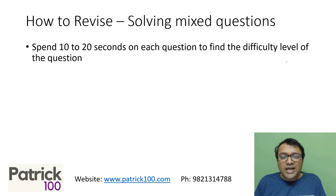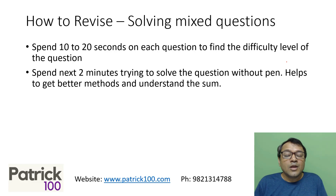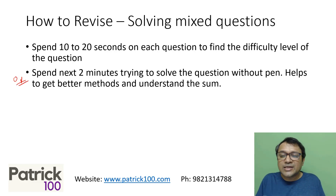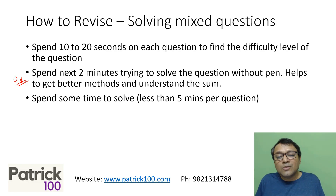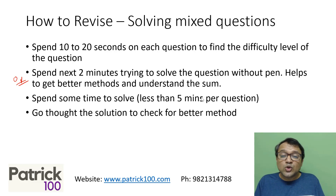A good way to approach each question: spend around 10 to 20 seconds on it to gauge the difficulty level, because one important exam skill is identifying a question's difficulty as fast as possible. Then spend the next two minutes trying to solve it — ideally without a pen. Solving without a pen pushes you towards better methods and a deeper understanding. This is optional, but if you're good at maths, try it. After that, solve it normally with pen. If you got the answer without pen, you can skip this step; otherwise solve with pen. If it takes more than five minutes, go directly to the solution.